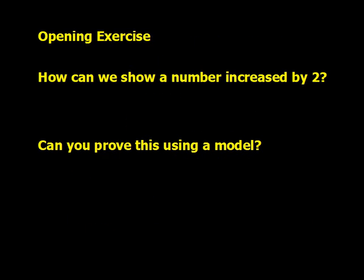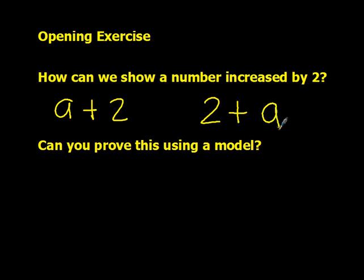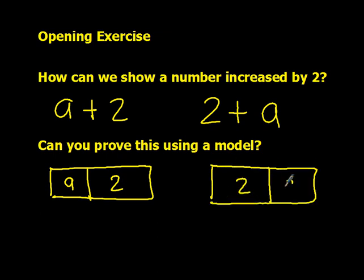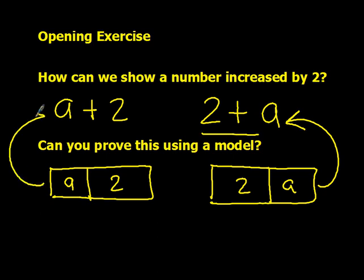How can we show a number increased by 2? A couple ways to do that: we can have a number represented by A plus 2, or we could do 2 plus A. To represent that using a model, construct yourself a tape diagram. Let this be A and this be 2, or let this be 2 and this be A. This matches up with the corresponding expressions.